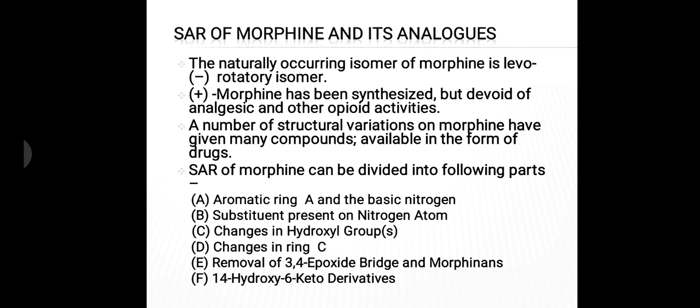SAR of morphine can be divided into six components: first is the aromatic ring A and the basic nitrogen; second is the substituent present on the nitrogen atom; third is changes in hydroxyl groups; fourth is changes in ring C; fifth is removal of the 3,4-epoxide bridge and morphinans; and the last one is the 14-hydroxy-6-keto derivatives.